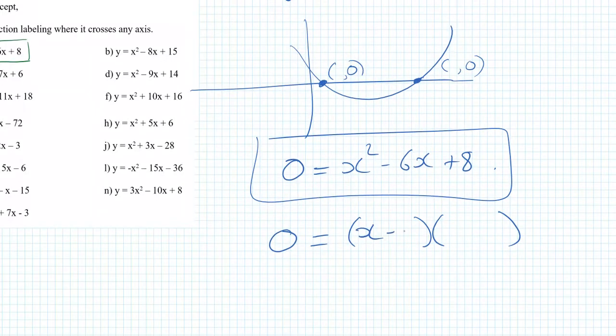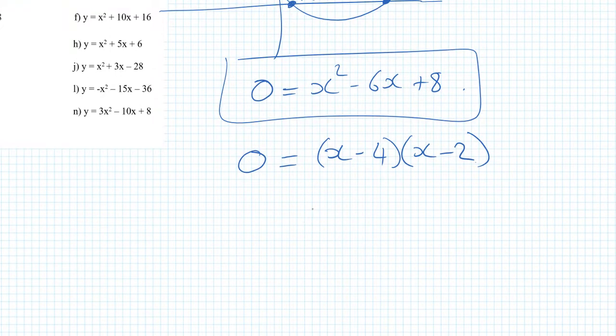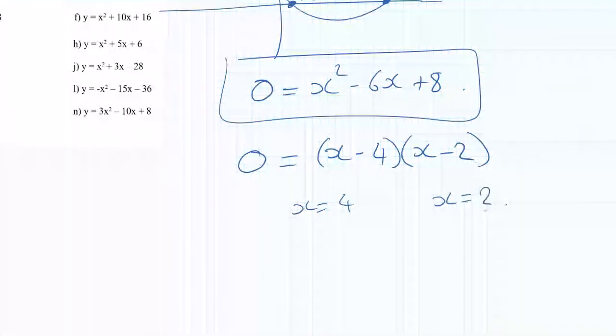That's going to be x minus 4 and x minus 2. In order for this to be zero, either x minus 4 is zero, giving me x equals 4, or x minus 2 is zero, giving me x is equal to 2.